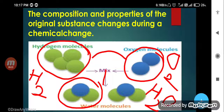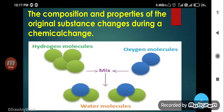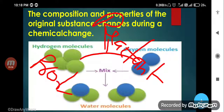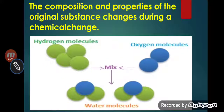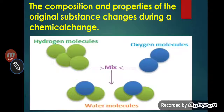Water has totally different properties than hydrogen gas and oxygen gas. Before the arrow, these substances are called reactants. The substances before the reaction are called reactants, and the new substances formed are called products. Hydrogen gas and oxygen gas are the reactants, and once they combine chemically, water is the product. In a chemical reaction, composition and properties will change.